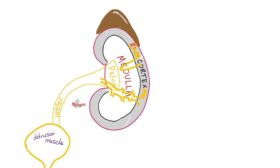The venous side mirrors the arterial side: peritubular capillaries → venules → interlobular vein → arcuate vein → interlobar vein → segmental vein → renal vein → inferior vena cava → right atrium of the heart. So we've covered the arterial part, the venous part, and now the urine/nephron part.